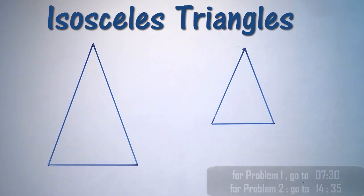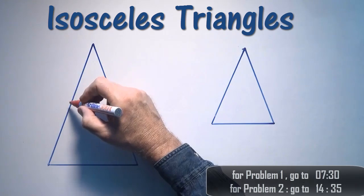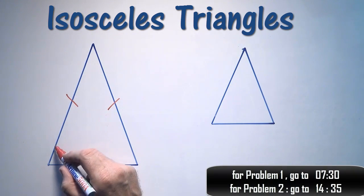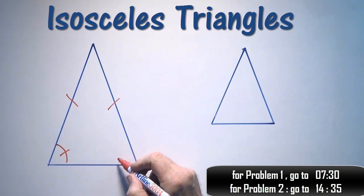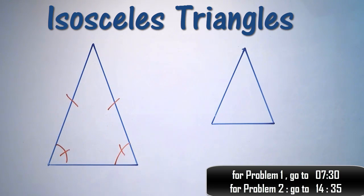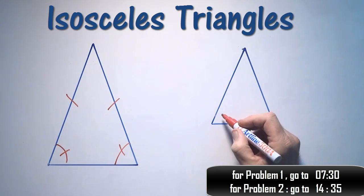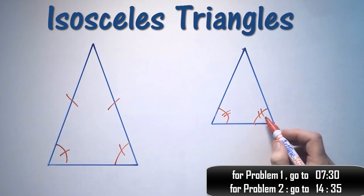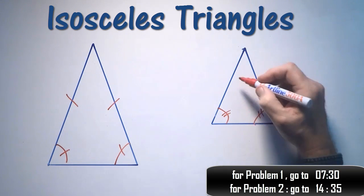First of all, let's have a look at isosceles triangles. An isosceles triangle has two equal sides by definition, and the angles opposite each of those equal sides are equal. Conversely, if I had a triangle with two equal angles, the sides opposite each of those equal angles are equal.